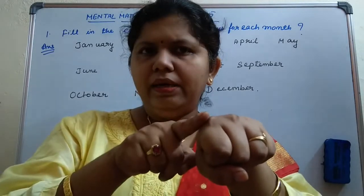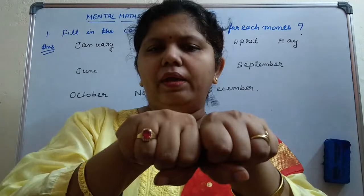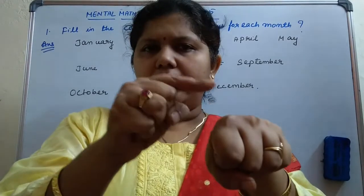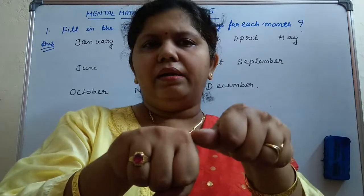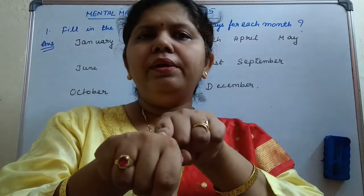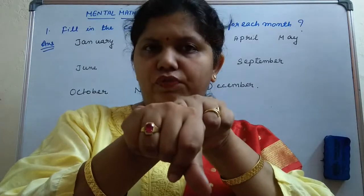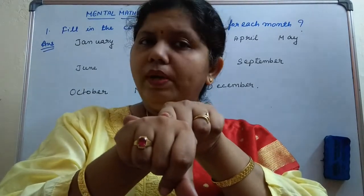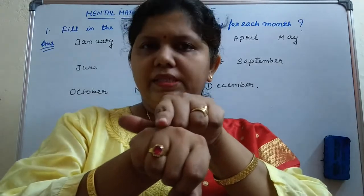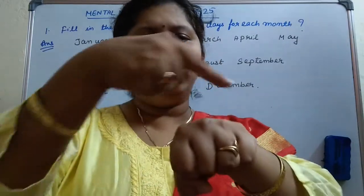After July, make the fist of the next hand and keep it connected with this one. You will get two raised portions next to each other — August. The ending raised knuckle of the first hand and the starting raised knuckle of the second hand means both July and August will have 31 days. September will come in the not raised ones. Then the raised knuckle is October. The not raised is November. Then comes December. In this way for all 12 months you can calculate.